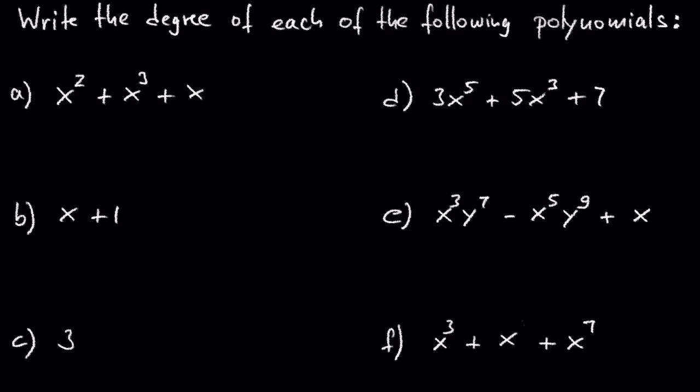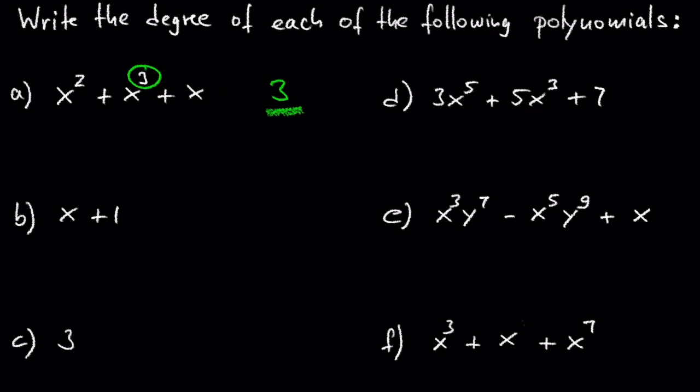Write the degree of each of the following polynomials. In A we have x squared plus x cubed plus x. The degree of this polynomial is 3, because the degree of the leading term x cubed is 3.